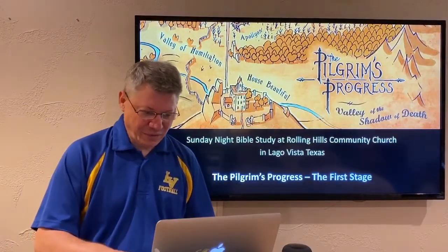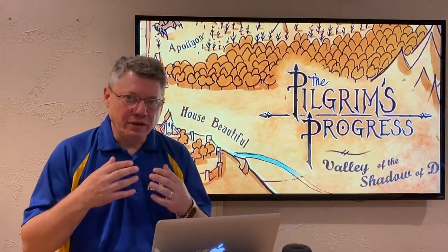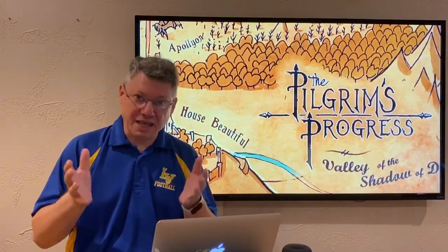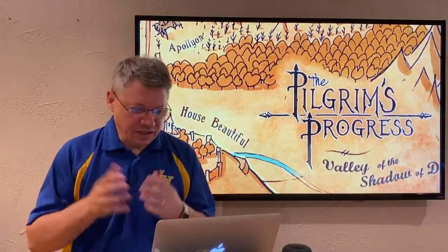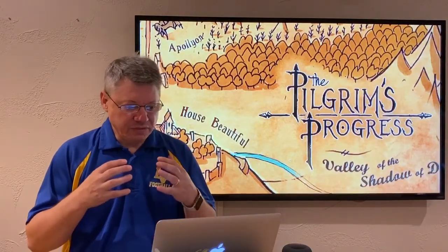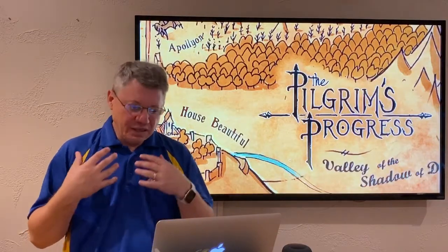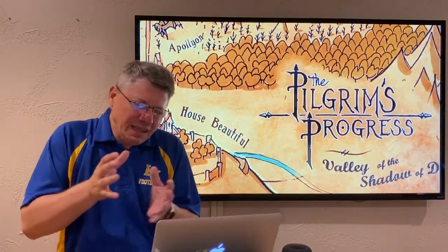Good evening. We are off and running into our first real lesson of the Pilgrim's Progress. Last week we went through an introduction of John Bunyan's life, which has a lot of relevance to what we're going to be talking about tonight when we get into this first journey, this first stage of the Pilgrim's Progress. Tonight we're going to start digging into this allegory. Christian is in his hometown, a place called the City of Destruction.